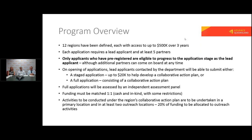Activities to be conducted under the region's collaborative action plan are to be undertaken in a primary location — one city or town. We are requiring proponents to nominate at least two outreach locations in their region, and 20% of the funding being sought and allocated must be towards supporting activities in those outreach locations.